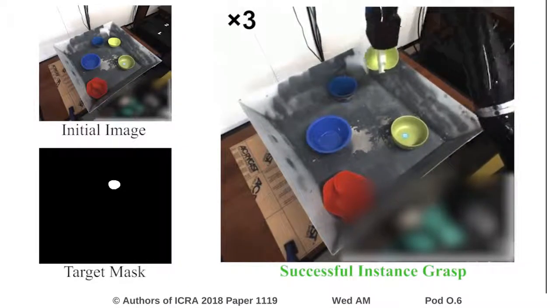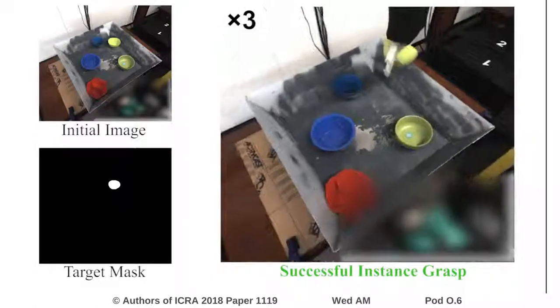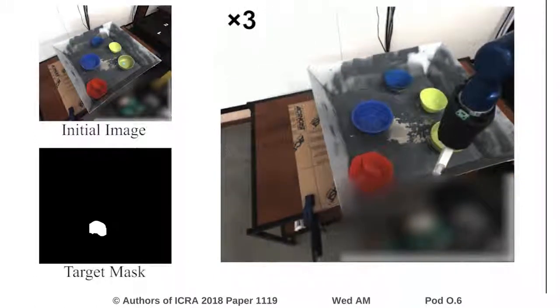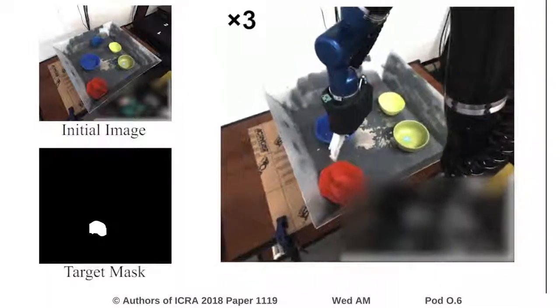At the beginning of each episode, an initial RGB image of the scene is taken from a monocular camera mounted on the robot pan-tilt, and the target object is specified by a binary mask.